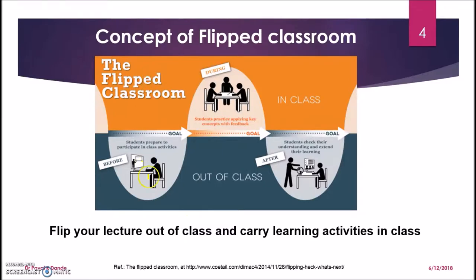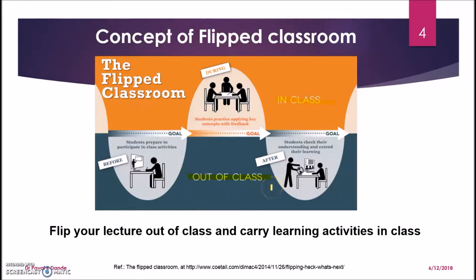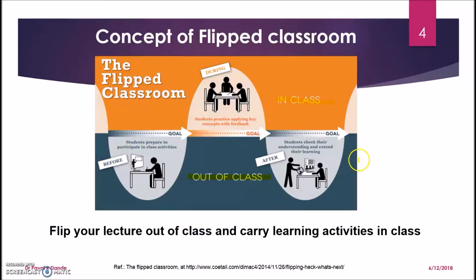So these were the two different parts of flipped classroom which we have discussed earlier. There are two parts: one is in class and the other is out of class. Today we are going to talk about what needs to be done in the out of class. Out of class activities are divided into two parts — the teacher and the student have to do some activities before the class, and there are some activities which need to be conducted after the class. We will be discussing about both in our slides to come.